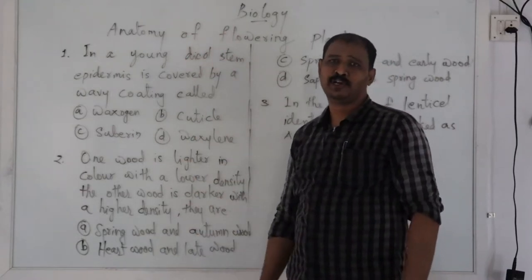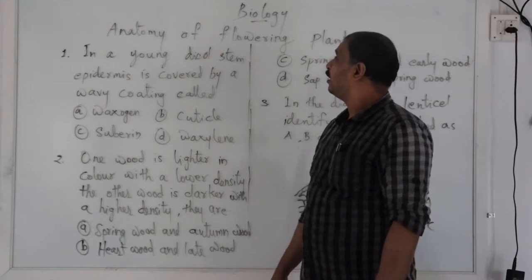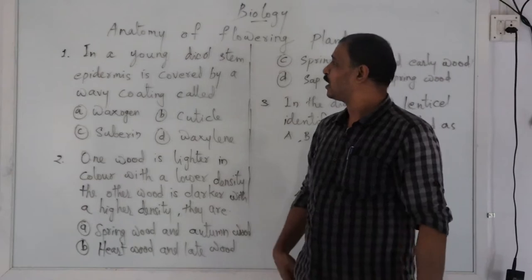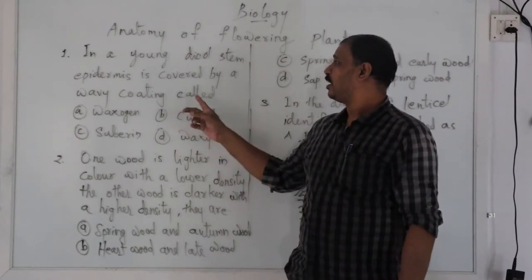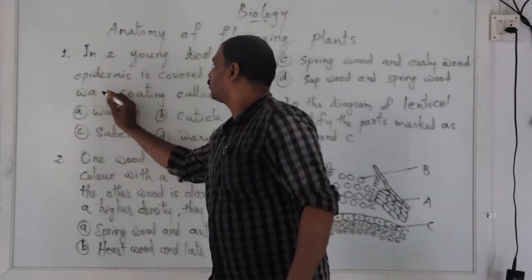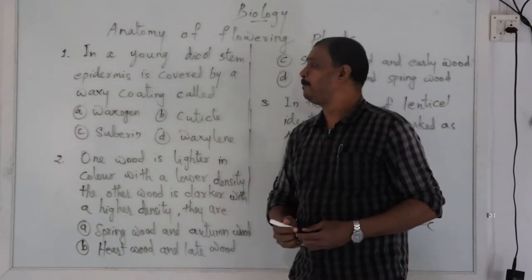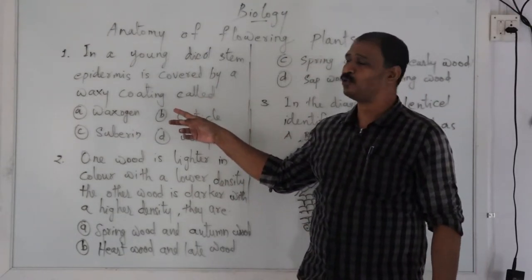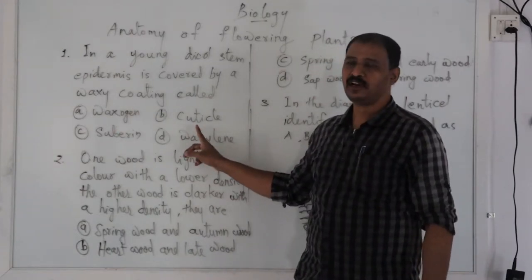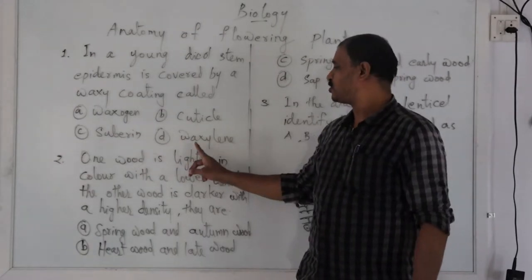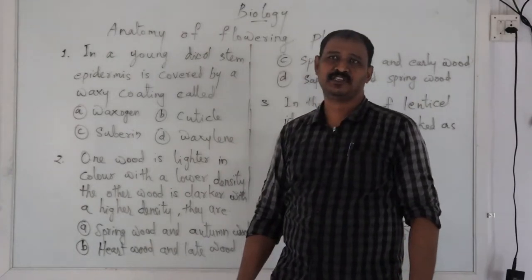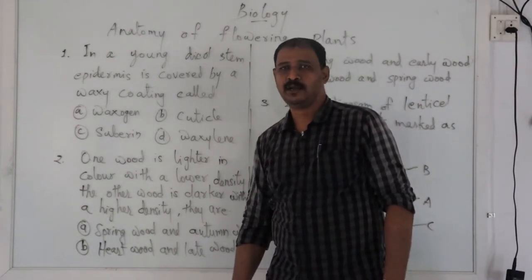Anatomy of flowering plants. First question: in a young dicot stem, epidermis is covered by a waxy coating called — option A: waxogen, option B: cuticle, option C: suberin, option D: waxillin. It is the outermost layer of the plant parts.